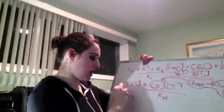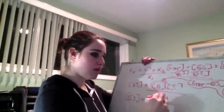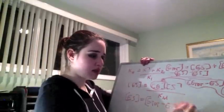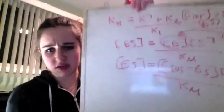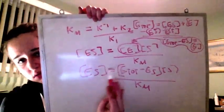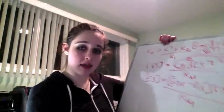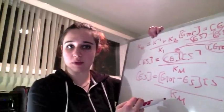So now we have ES equals E total minus ES times S over Km. So now I'm going to distribute that S, and then I'm going to split them up into fractions.